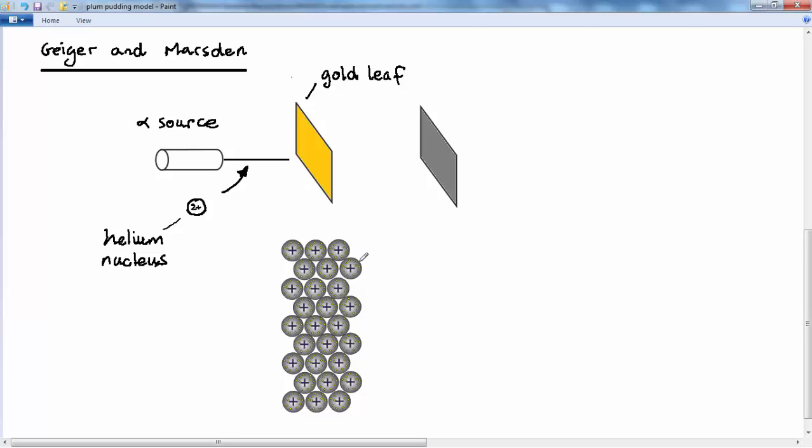Following the Thomson plum pudding model for the atom, we remember here we've got gold atoms with the charges evenly distributed about their structure, so there's no concentration of charge at all. They expected there to be no electrostatic resistance to this alpha particle passing through the gold leaf, simply due to the fact that the charges were spread out through these large gold atoms, and therefore the electrostatic force acting on this helium nucleus would be very weak.